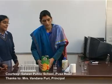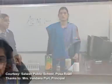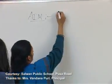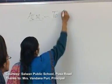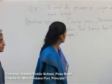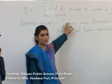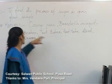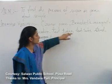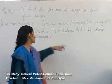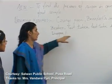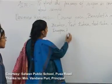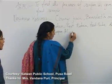So today, the aim of our experiment is to find out the presence of sugar in the given food sample. Our materials required are orange juice — our sample — Benedict's reagent, the chemical for the test, beaker, test tubes, and a dropper. In our lab, we are going to use the microwave.